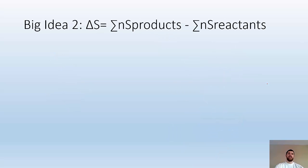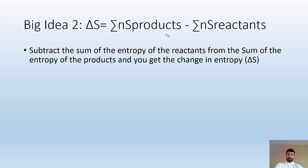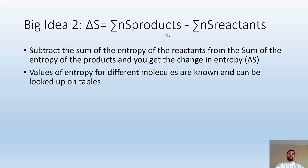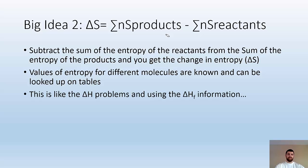Big Idea 2: ΔS = ΣnSproducts - ΣnSreactants. This looks scary, but you're going to be like, oh, this is just like Hess's law—stuff we've done before, but now with entropy. You subtract the sum of the entropy of the reactants from the sum of the entropy of the products to get ΔS. Values of entropy for different molecules can be looked up on tables, just like ΔHf formation information.